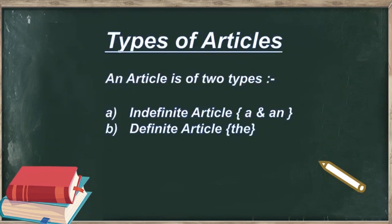The article is divided into two broad categories: indefinite article and definite article. A and an are part of the indefinite article, whereas the is part of the definite article.